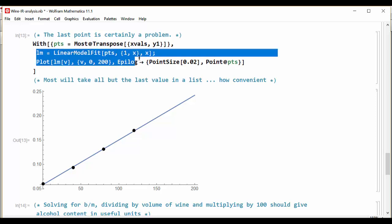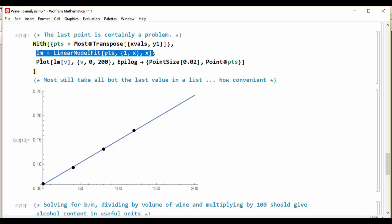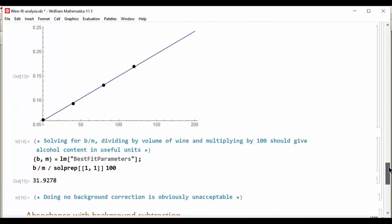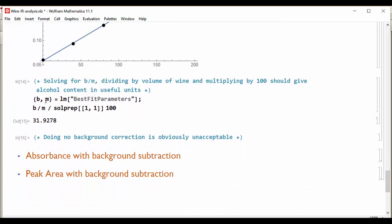And sure enough, when we create the linear model this time, I am going to save the linear model as a symbol for later use and plot it. We see that we get a fairly nice curve that fits the linear expression. And from that we can extract the slope and the intercept, and we know that the slope and the intercept are going to give us the x-intercept, which we can then divide by the volume of the wine that was used in our sample and then multiply by 100 to get a percent. And sure enough, we get around 32 percent for the alcohol content in this wine, which is absolutely completely and utterly wrong.